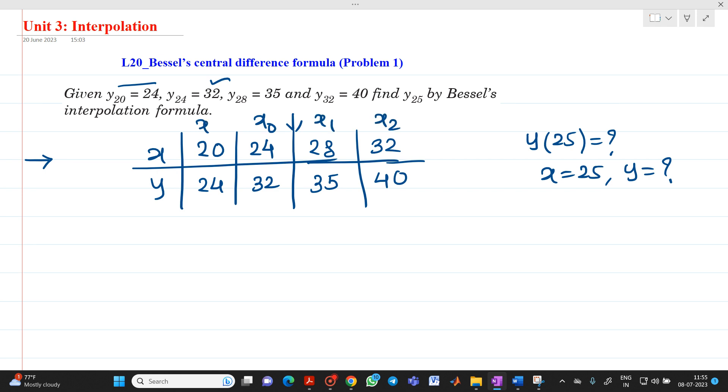This will be x₋₁. Here, this will be y₀, y₁, y₂. This will be y₋₂. Now, here, let me first prepare a central difference table. So how to prepare a central difference table.